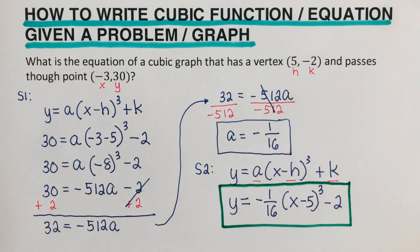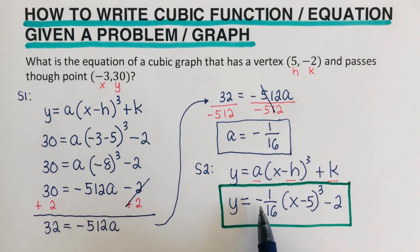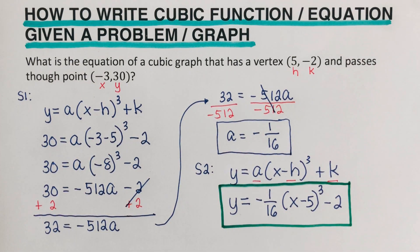If we want this in function form, you can have this as F of X equals negative 1 over 16 times X minus 5 cubed minus 2.